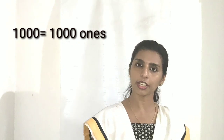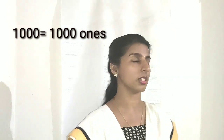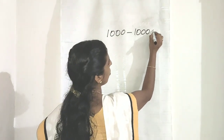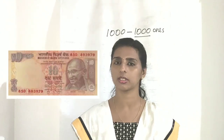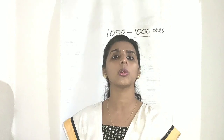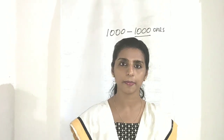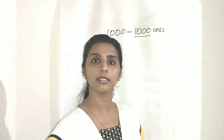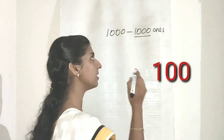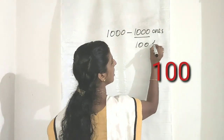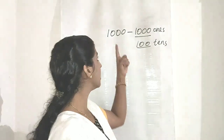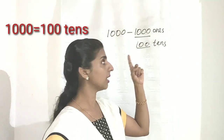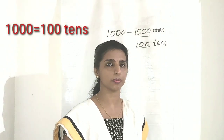So we can say that thousand is equal to thousand ones. That is the first form of thousand: thousand ones. Next, if all the notes are of ten rupees, how many ten-rupee notes make thousand rupees? Yes, hundred tens — hundred tens makes thousand rupees. So this is another form of thousand: hundred tens is equal to thousand.